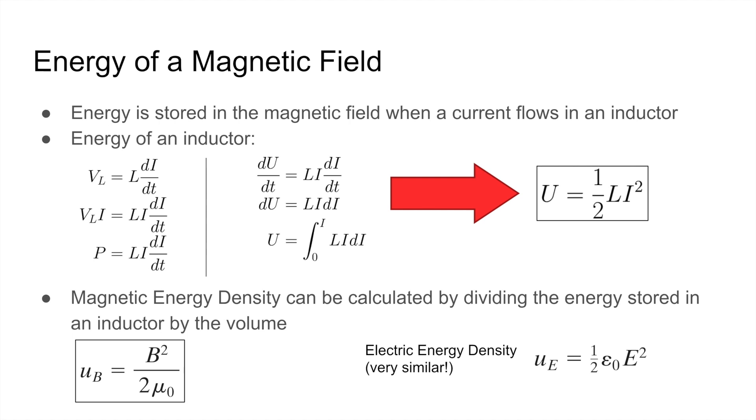The magnetic energy density can be calculated by dividing the energy that we found, U equals 1 half LI squared, by the volume. We're not going to show how that is derived, but the energy density is given by B squared over 2 mu naught, where B is the magnetic field. This is very similar to electric energy density, which is 1 half epsilon naught times E squared. You'll notice how there's a 1 half, there's the constant, and there's E squared or B squared in both of them.